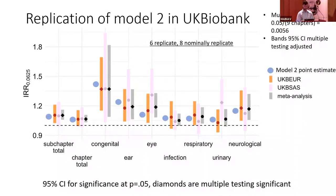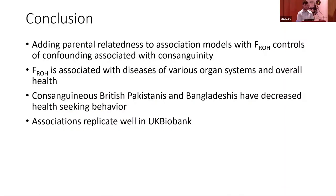We replicated these associations between F-ROH and various disease chapters in UK Biobank using Model 2. Six associations completely replicated after multiple testing correction, eight nominally replicated, and all had concordant directions of effect. In conclusion, adding parental relatedness to association models with F-ROH controls for confounding associated with consanguinity. F-ROH is associated with diseases of various organ systems and overall health, and consanguineous British Pakistanis and Bangladeshis have decreased health-seeking behaviors.